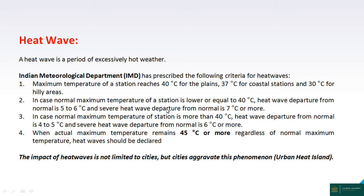When the maximum temperature is around 40 degrees Celsius, the heat wave departure from normal is 5 to 6 degrees Celsius. When temperatures are higher, the departure from normal required is 4 to 5 degrees Celsius, and heat wave is declared earlier. Additionally, if the actual maximum temperature is 45 degrees Celsius or more, a heat wave is declared.